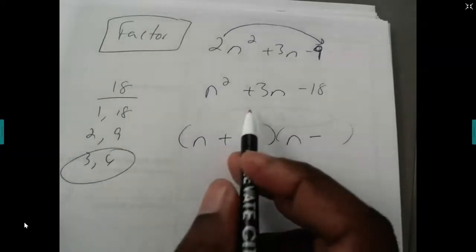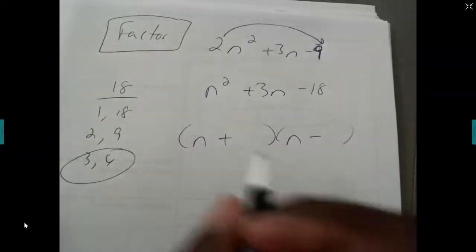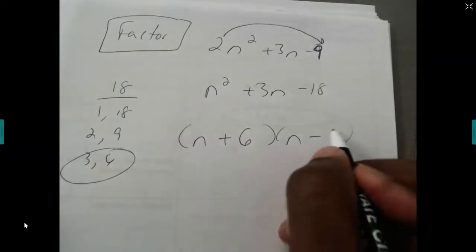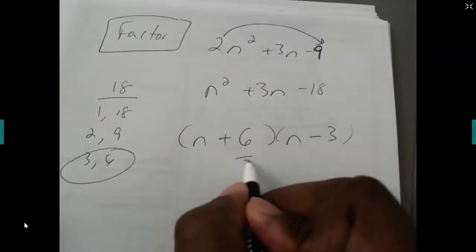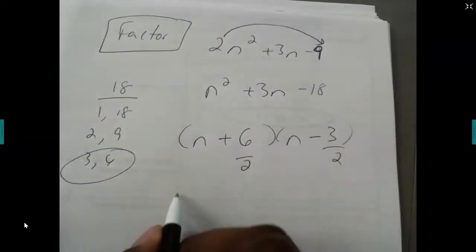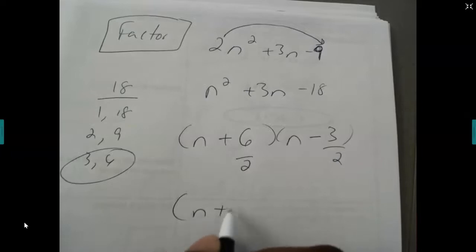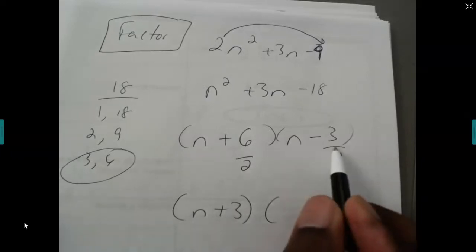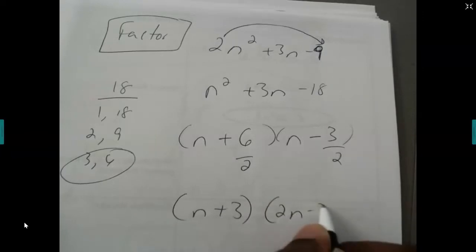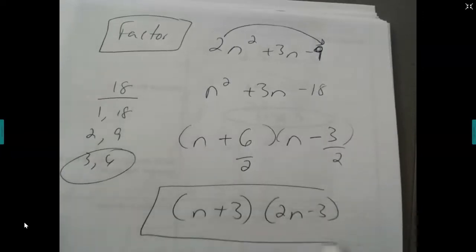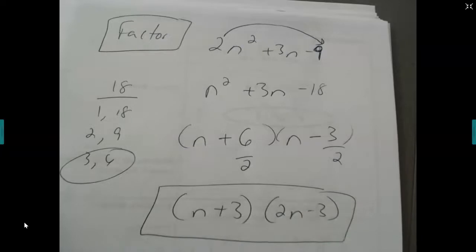So the largest one is positive because that's a plus sign. So I put the 6 here, the 3 here. And I've got to remember because I multiplied by 2, I've got to divide both by 2. So this means n plus 3. And because this doesn't reduce, the 2 comes up in front of n. It'll be 2n minus 3. That's it. You factored it again.